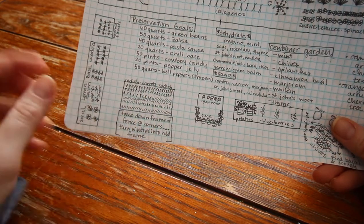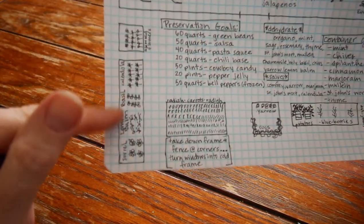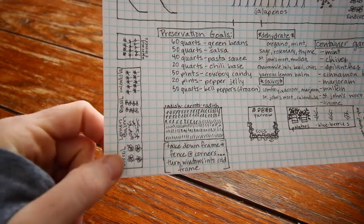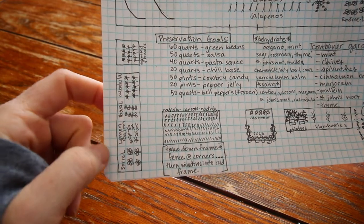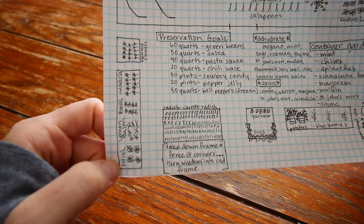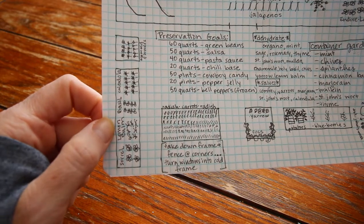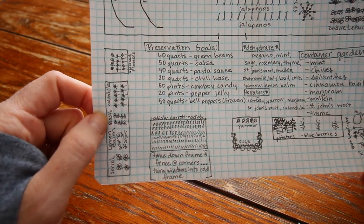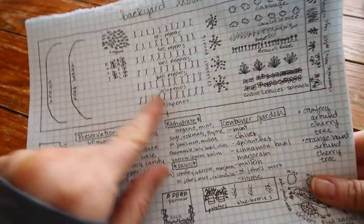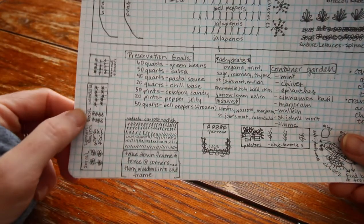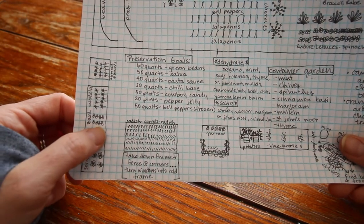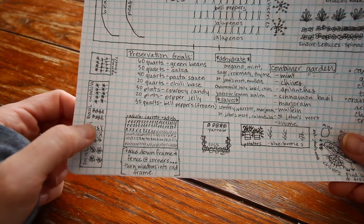This is our hugelkultur bed area. I'm gonna plant some perennial stuff and then some annual stuff. I'm gonna do sorrel, lemon balm, some different kinds of basil. I have the holy basil up here and I've got like three or four different kinds. I love basil.